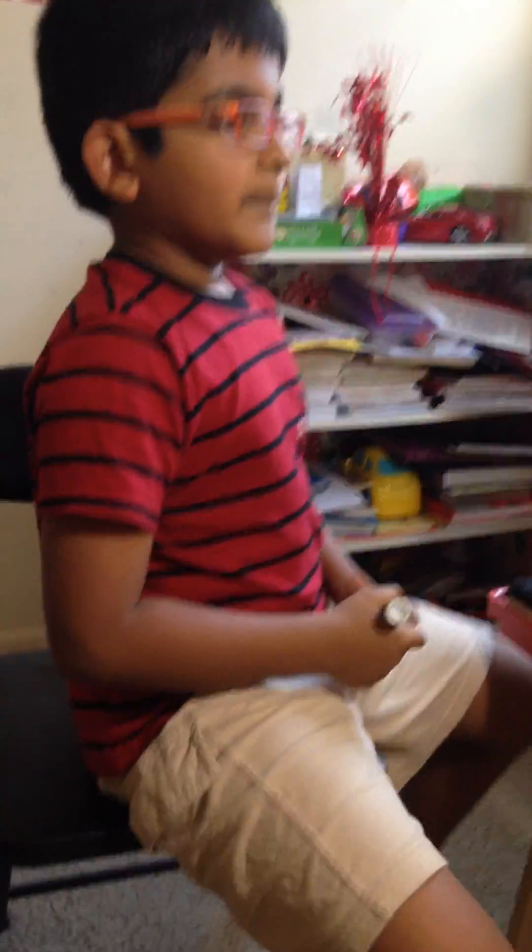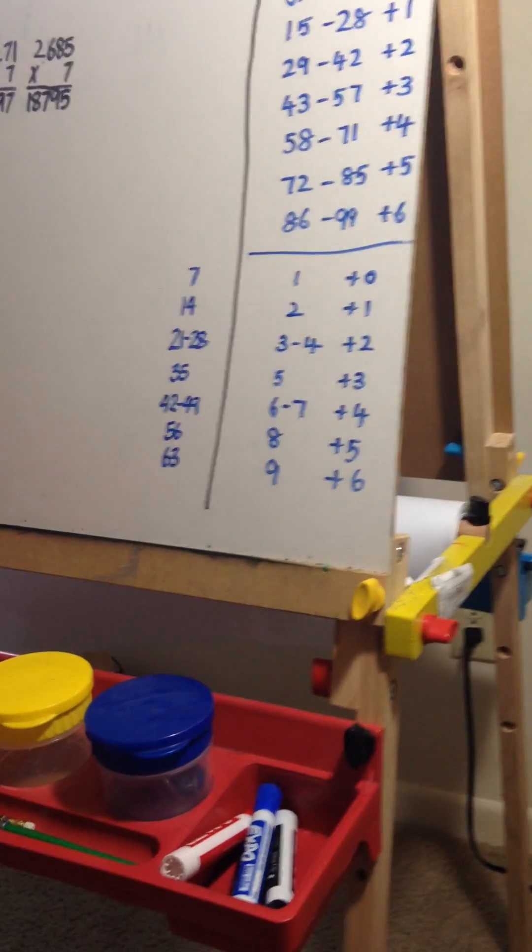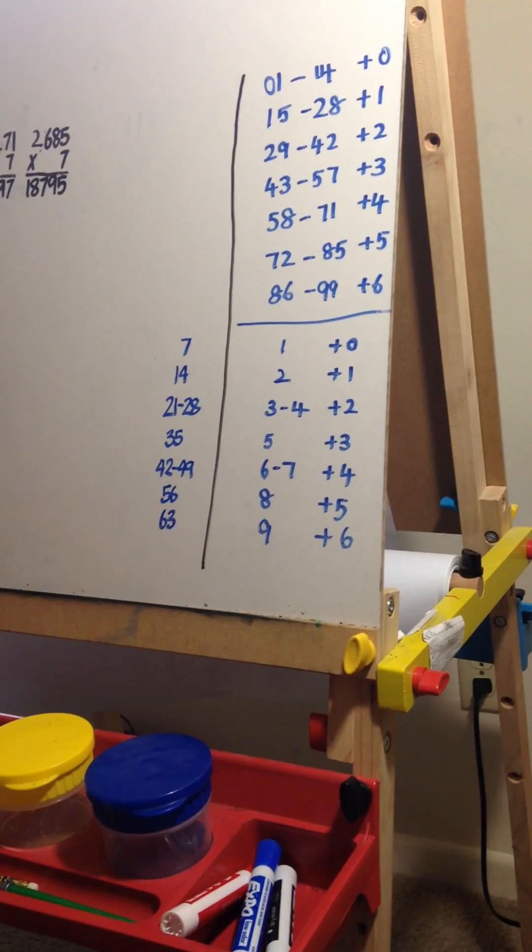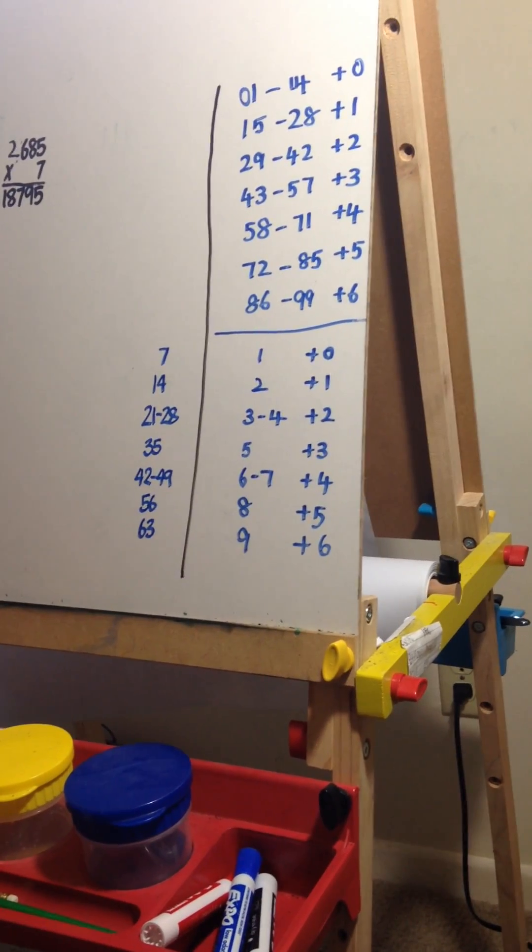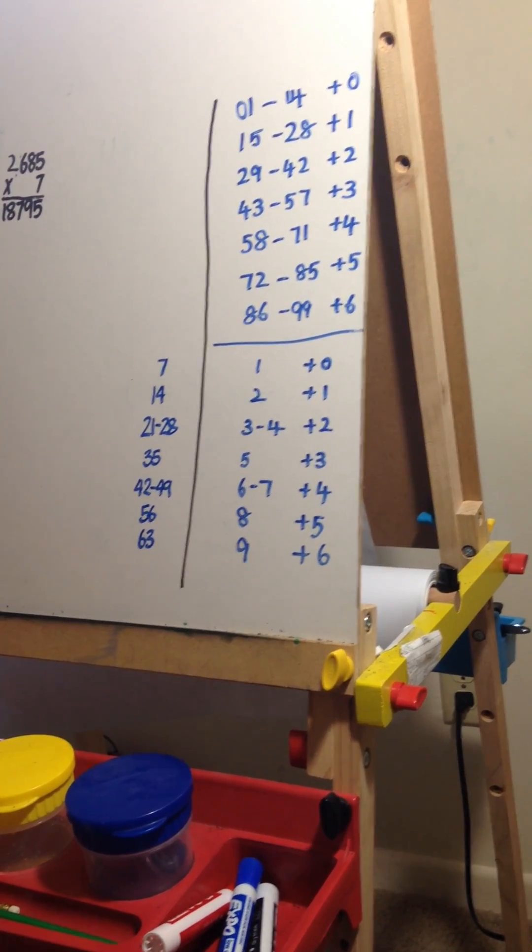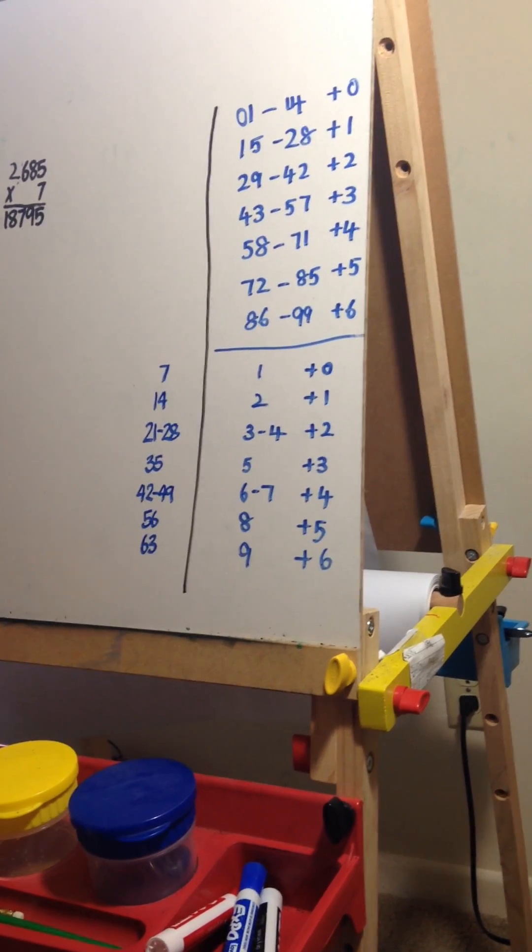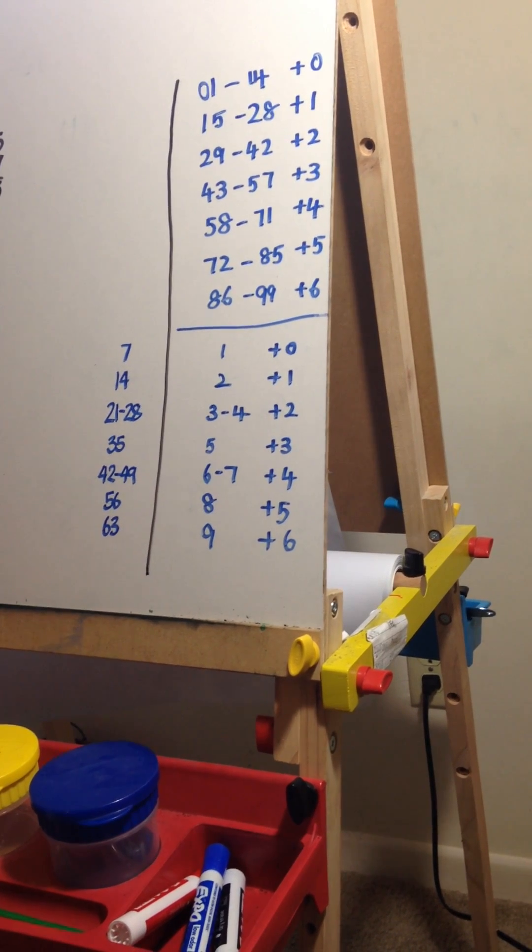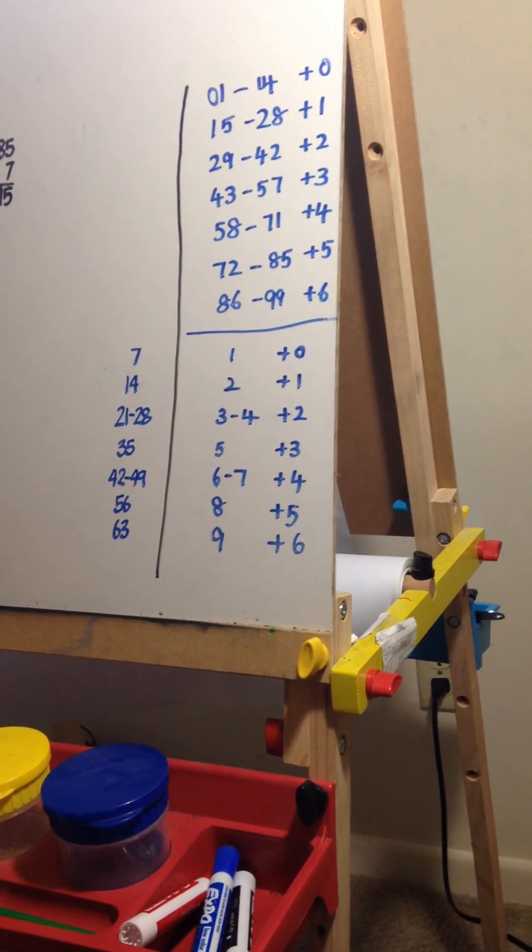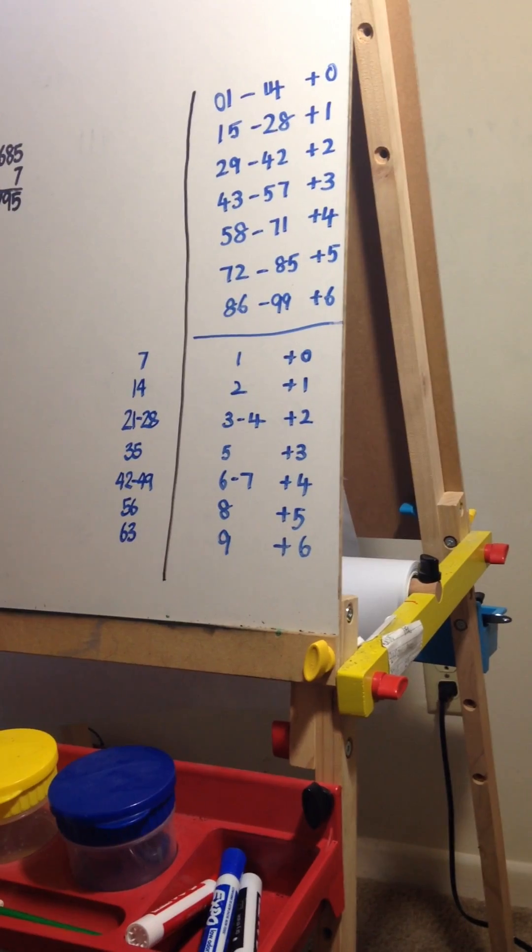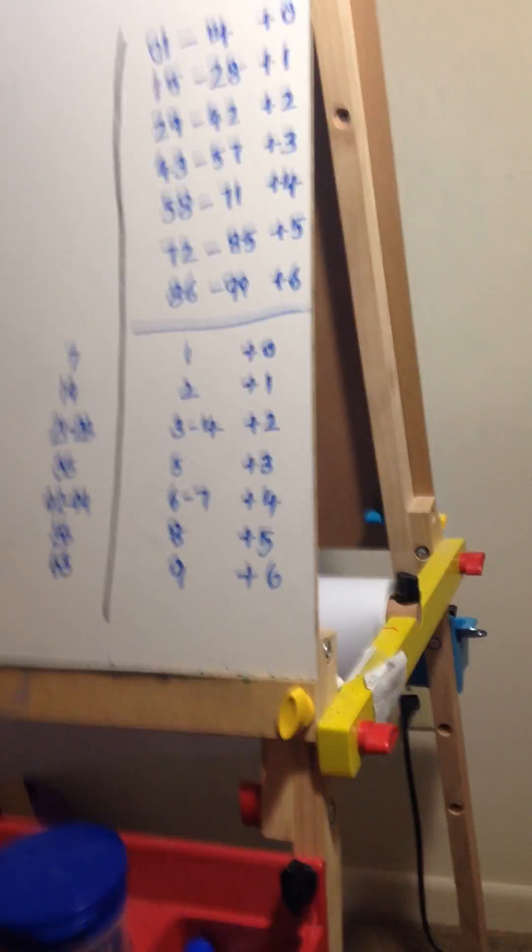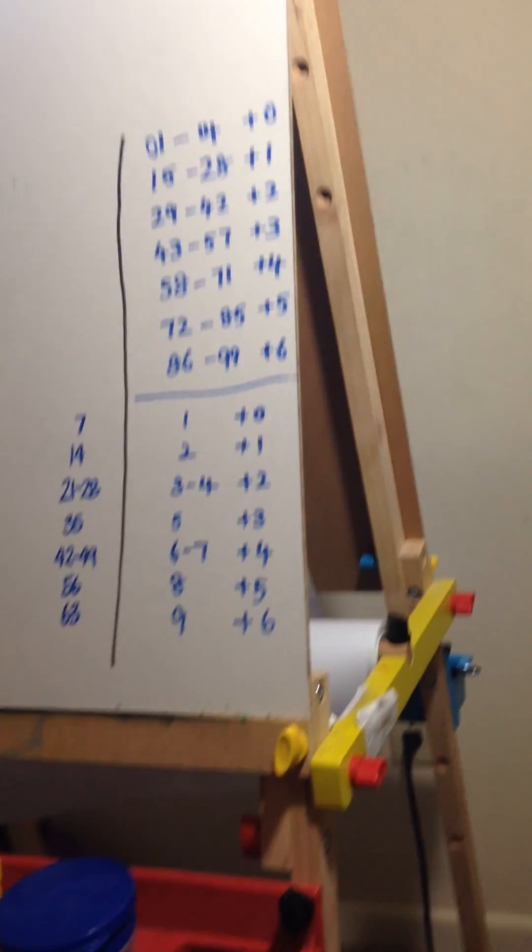So how did you come up with this grouping? The grouping is: if you have 1 in the end of any number, the end of the answer will be 7. For 2, it will be 4. 3 becomes 1, 4 becomes 8, 5 becomes 5, 6 becomes 2, 7 becomes 9, 8 becomes 6, 9 becomes 3. So that is why you add plus 1, plus 2, plus 3.